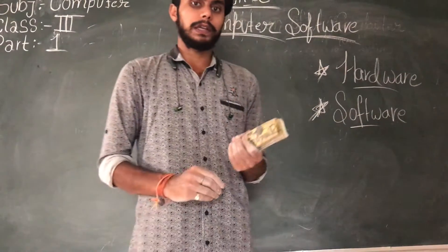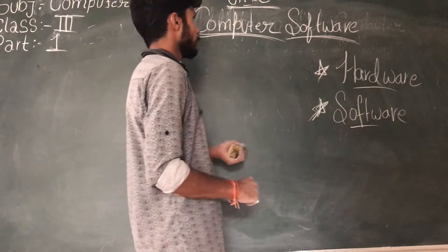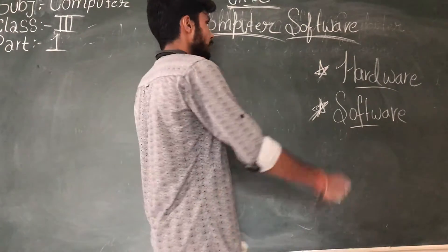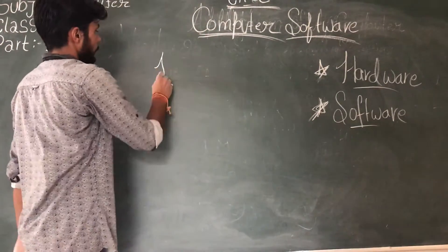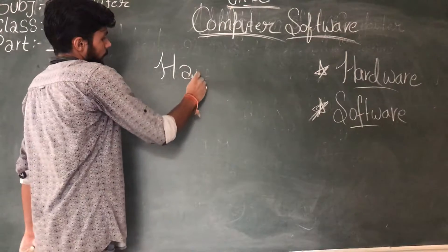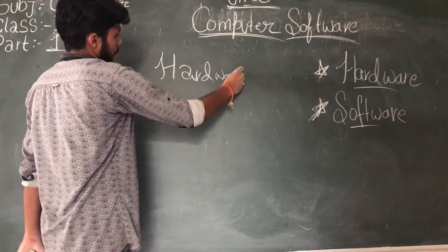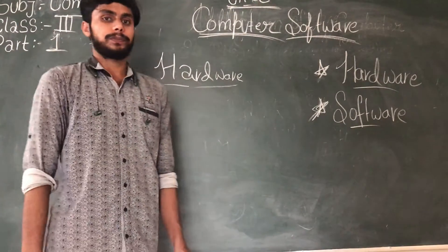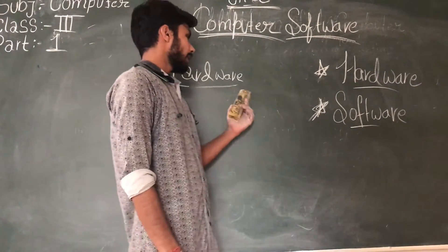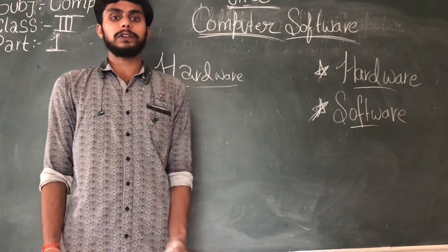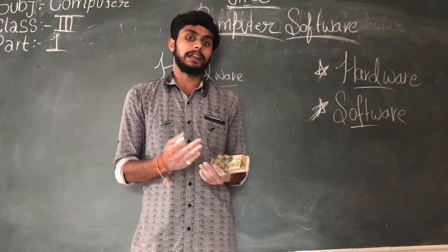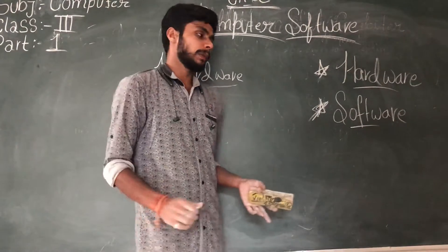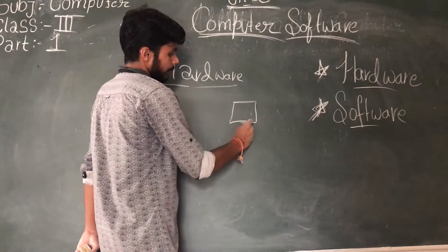Now let's move on to the topics. I will explain how computer software works. First of all, let's talk about hardware. Hardware is what makes up the computer. This is an important part of the computer system. Hardware is basically the physical components — we can see and touch all the hardware. In the computer system, we can see the physical components.